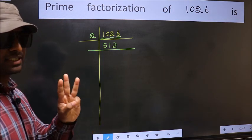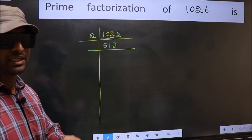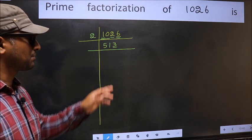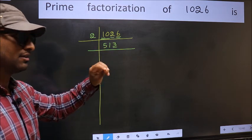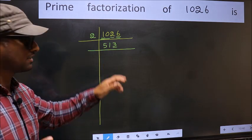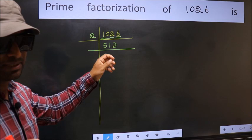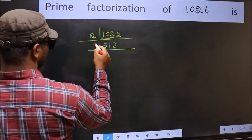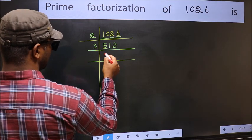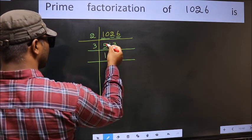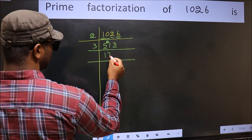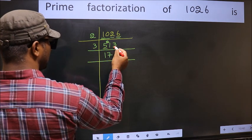Next prime number: 3. To check divisibility by 3, we should add the digits: 5 plus 1 plus 3, we get 9. Is 9 divisible by 3? Yes. So this number is also divisible by 3. So take 3 here. First number 5 — a number close to 5 in the 3 table is 3 times 1 is 3. 5 minus 3 is 2, carried forward: 21. When do we get 21 in the 3 table? 3 times 7 is 21.